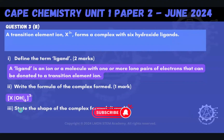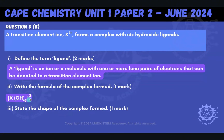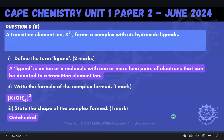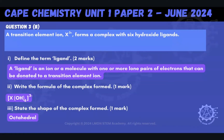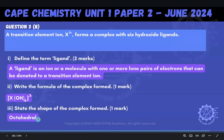Part three says we're supposed to state the shape of the complex ion formed. Here's our complex ion — it has six ligands in it. The key thing is we're always looking at how many ligands are bonded to that central atom. Because we have six, that's going to form an octahedral shape. Six ligands, six coordinate bonds — you get an octahedral shape.